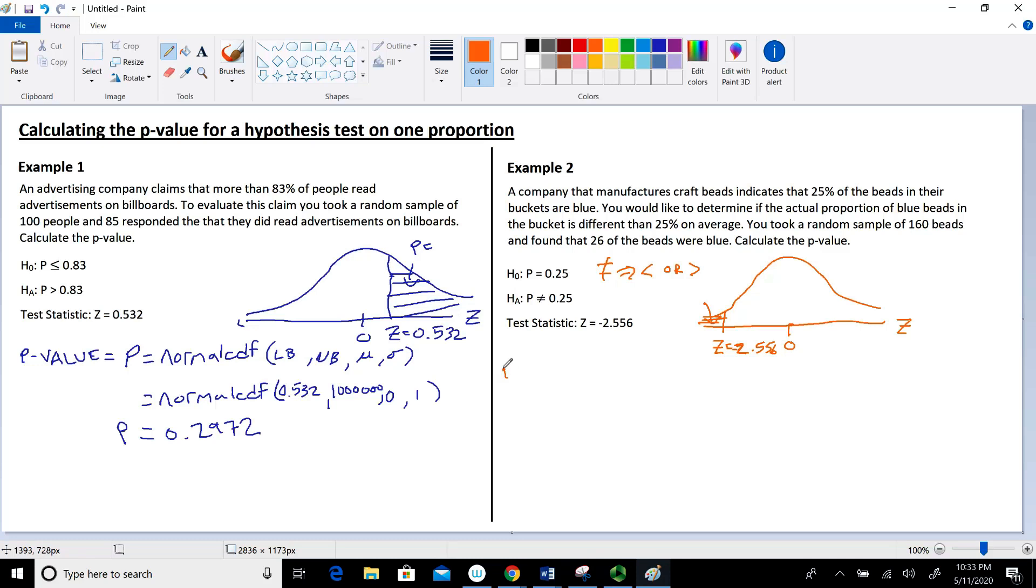To calculate our p-value, we use the normal CDF function. Our mean is 0 and standard deviation is 1. We have to determine if this is a lower or upper bound. It happens to be the upper bound because we want the area to the left. Think of the lower bound as the left most value and the upper bound as the right most value.